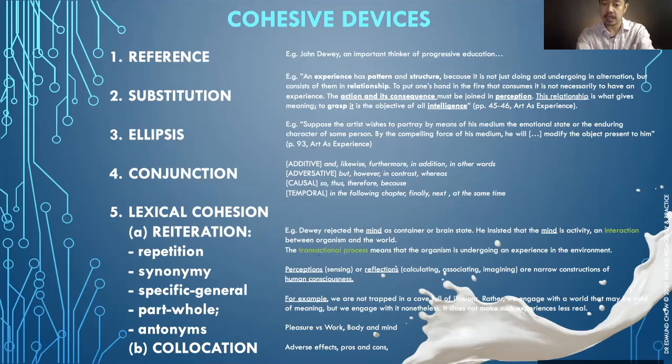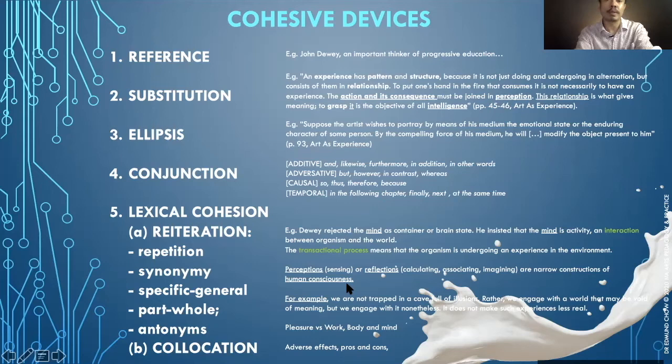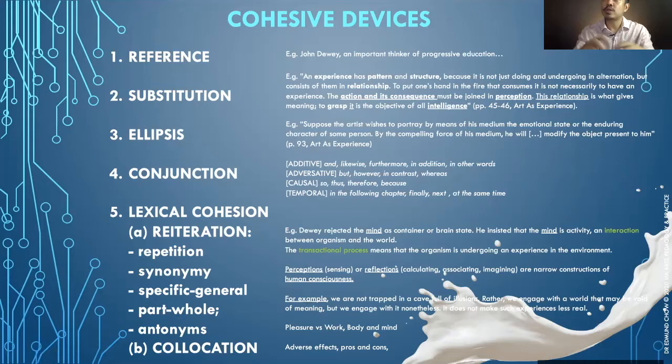This is also related to specific-to-general. Perceptions, sensing, reflections, calculating, associating, imagining — these are all specific, narrow constructions of human consciousness, which is the general term. For part-whole, it's best to use words like 'for example' or 'to illustrate this,' because then you are expanding the idea in part or in whole. For example: 'We are not trapped in a cave full of illusions. Rather, we engage with a world that may be void of meaning, but we engage with it nonetheless.'